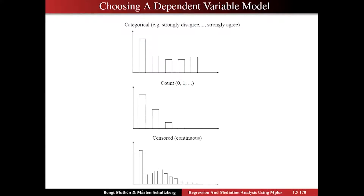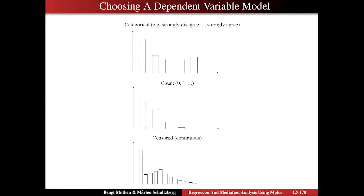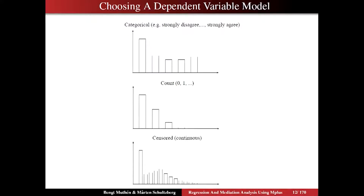In contrast, if you look at the bottom figure, you have a high piling up at zero. That means a standard linear model is totally inappropriate, because the assumption of zero mean residuals cannot hold — particularly not at the point that's zero.